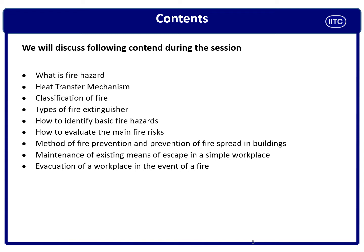How to identify basic fire hazards — if you are in the plant, it is our responsibility to identify fire hazards, the reasons for fire hazards, and fire risk. How to evaluate the main fire risk — because we work in the industry and should know how to evaluate whether the risk is high or low, what control measures to take, methods of fire prevention and fire protection, chances of fire spread in a building, maintenance of existing means of escape, and evacuation of the workplace in the event of fire.